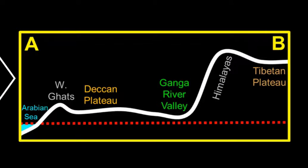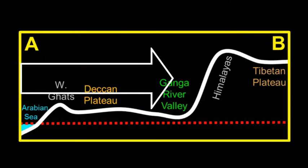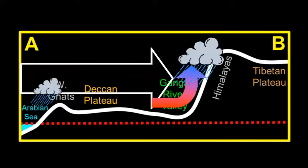Returning to the topographic profile of South Asia, we can insert the predominant wet monsoon wind patterns as they come off the Arabian Sea or the Indian Ocean, move onto the Indian subcontinent, and then interact with the Himalayan mountains. That explains the huge amount of rain on the Western Ghats and in the Himalayan mountains, which helps fill the Ganges River valley and gives it that vital freshwater source — causing the region to be highly populated and very agriculturally productive.